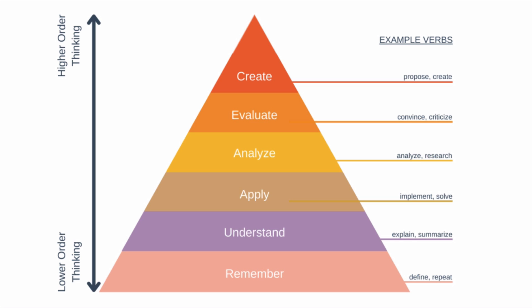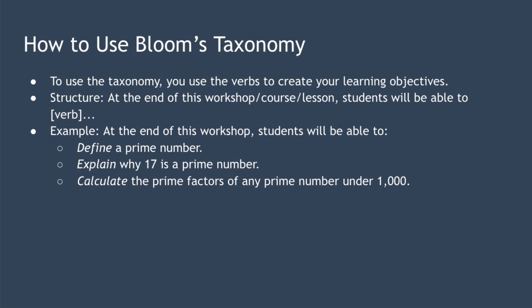There are verbs associated with each level of the taxonomy, and these verbs become important when you want to use Bloom's taxonomy. You choose a verb from the level you want to target and use that verb to set your learning objectives. Learning objectives are the knowledge, skills and capabilities a student can expect to acquire from your class or training, and they usually follow this structure: 'At the end of this workshop, lesson or course, students will be able to...' and then you describe what students will be able to do.